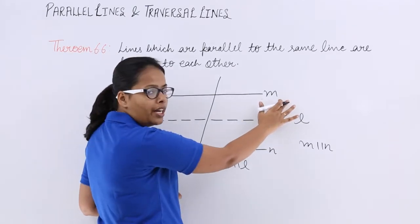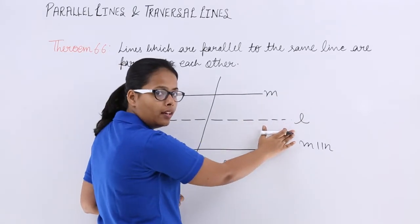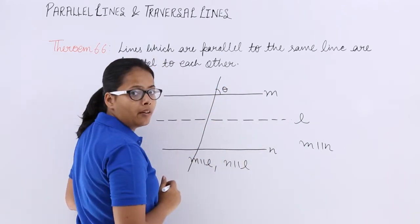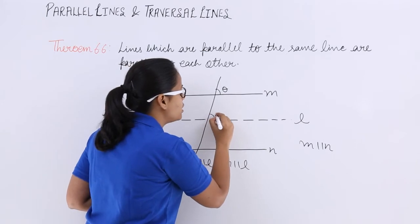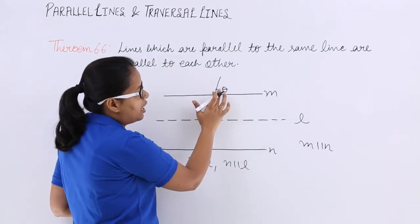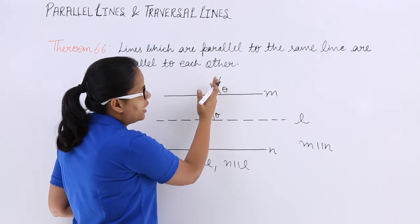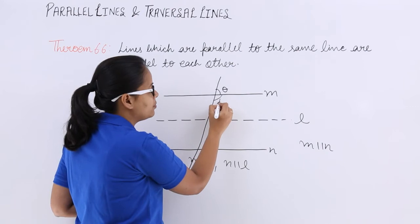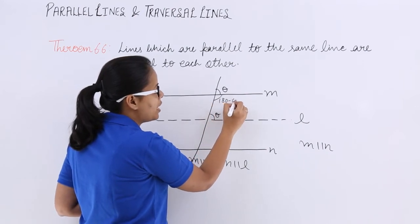As you know already that m is parallel to l. So if this angle is theta, what will this angle be? Pair of angles will be equal. Because if this is theta and this is the straight line here, this angle will be 180 minus theta. This will be 180 minus theta.